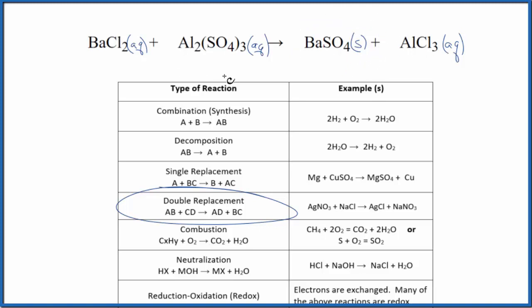If we wanted to balance it, we could say that we have two aluminums here and just one here. Put a two. Two times three, six chlorides. So let's put a three here. That balances the chlorine atoms.